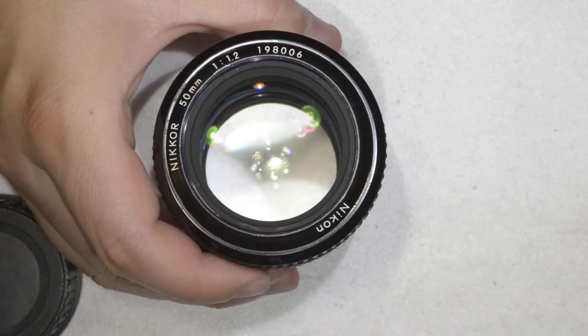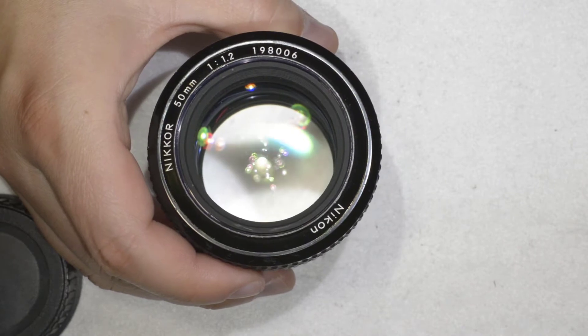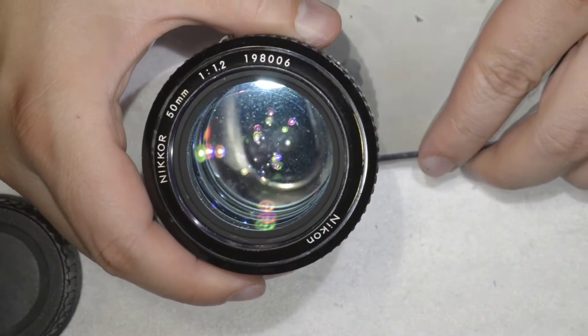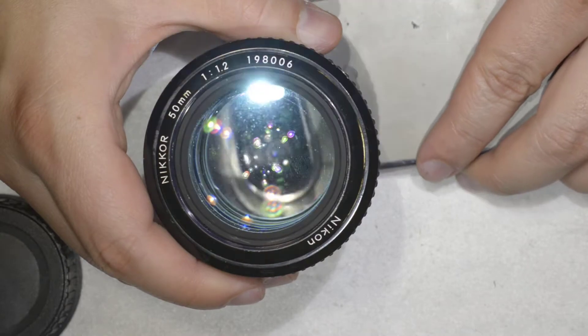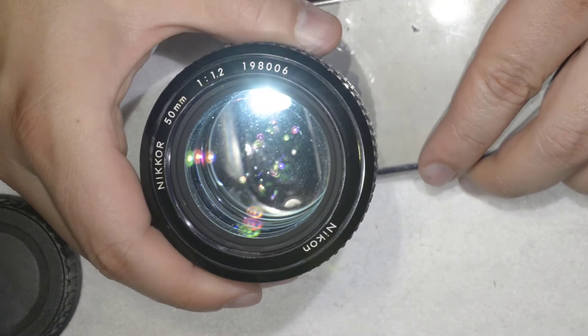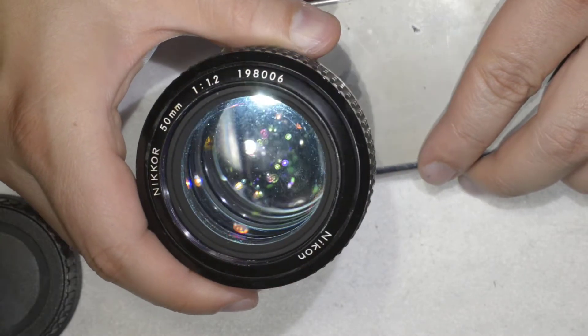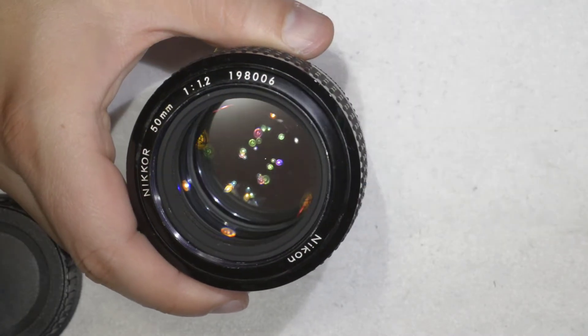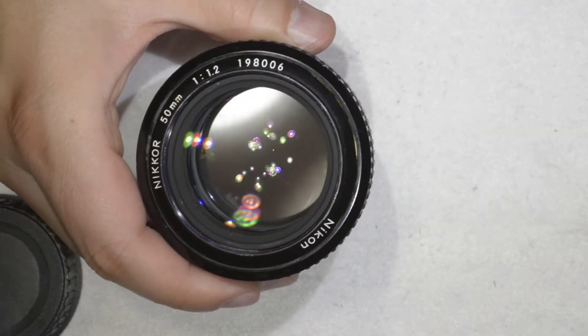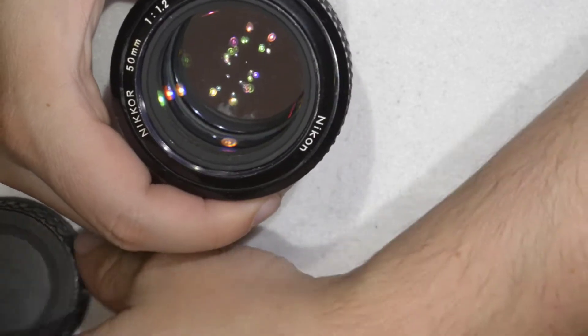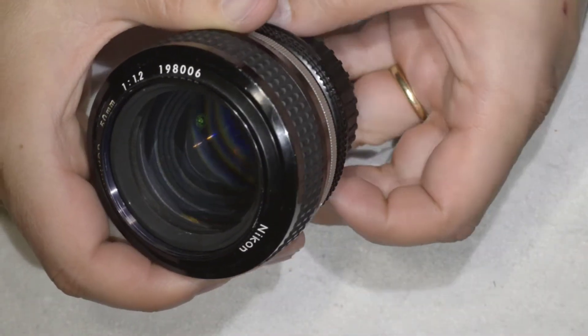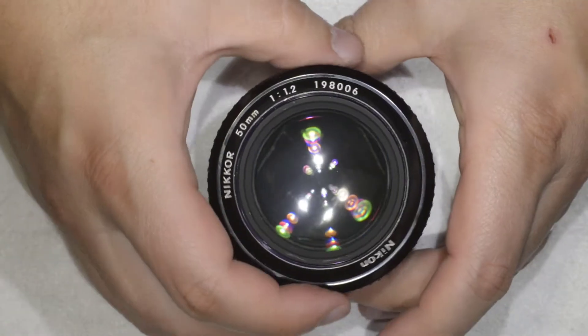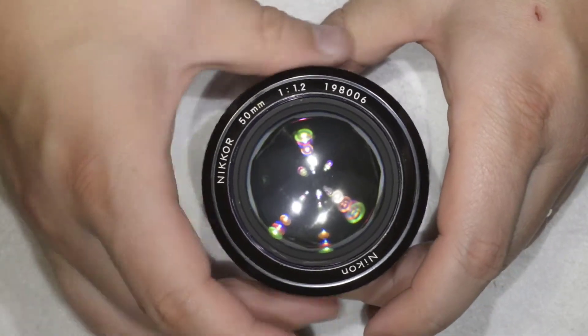I will show you when I start disassembling the lens that as you can see the lens is very dirty on the inside but we are going to fix all that. So I am going to show you how to open this lens for cleaning. Let's start doing that.